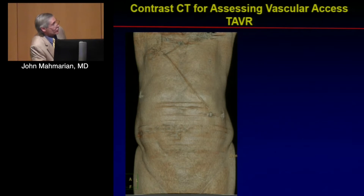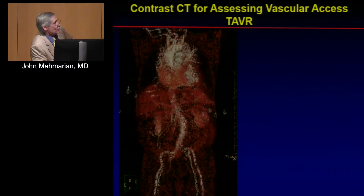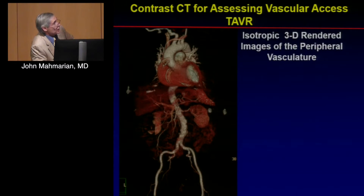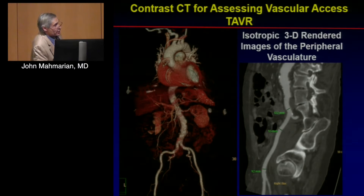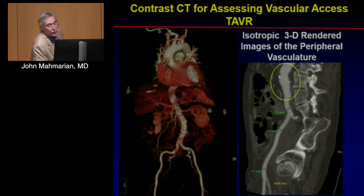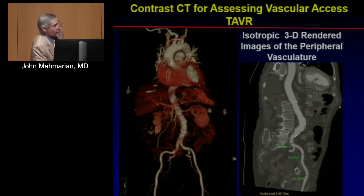We obtain isotropic 3D rendered images for peripheral vasculature, allowing very careful measurements in different planes to evaluate the iliac and femoral arteries, as well as the abdominal aorta. This patient had a small abdominal aneurysm. All measurements are isotropic and very precise, enabling accurate determination of whether the arteries can accommodate the delivery devices.